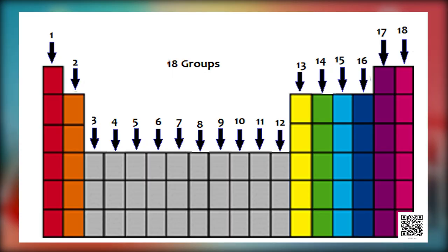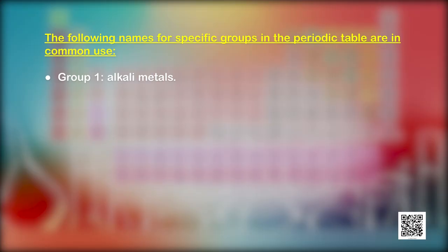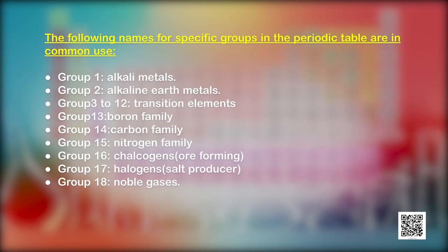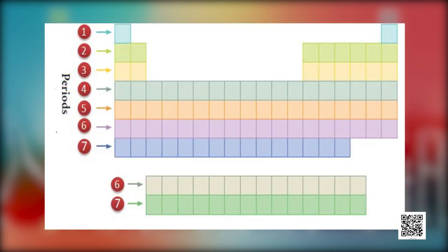Please note the following important features of the modern periodic table. Groups are numbered from 1 to 18; each group consists of elements having the same outer shell electronic configuration. Group 1 elements are the alkali metals; Group 2 are the alkaline earth metals; Groups 3 to 12 are called transition elements; Group 13 is the boron family; Group 14 is the carbon family; Group 15 is the nitrogen family; Group 16 are also called chalcogens or ore-forming elements; Group 17 are halogens or salt-producing elements; Group 18 are noble gases.